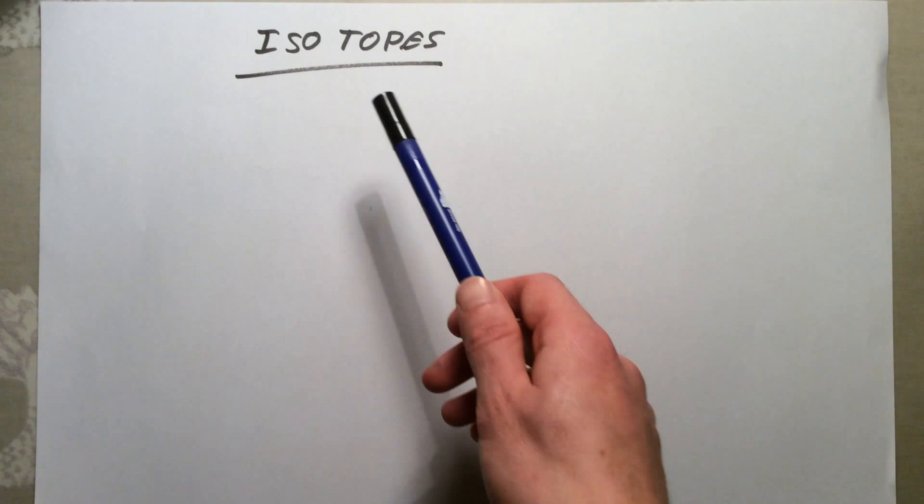The last section in topic one for additional chemistry is just for higher tier only, so those of you who are definitely doing foundation, this will not come up on your exam, though it is still useful to know. The last section in this topic is all about isotopes and what this means, what it is referring to.